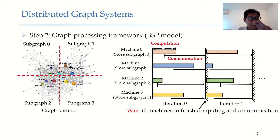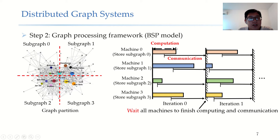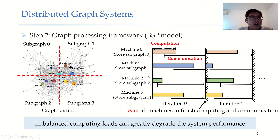After graph partition, the distributed graph system usually adopts the BSP model for computation. First, these partitioned subgraphs are stored in different machines. Then computation is executed in several iterations. In each iteration, each machine first finishes its local subgraph processing, then synchronizes with other machines. After all machines finish computation and communication, they can go to the next iteration. It is clear that imbalanced computing nodes can greatly influence the performance of distributed graph systems, because some machines may need to wait for data from other slower machines that are still doing computation.